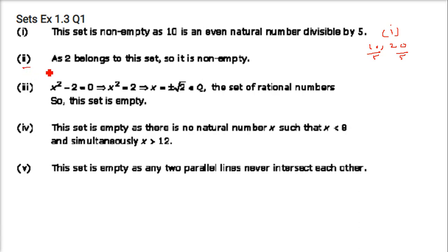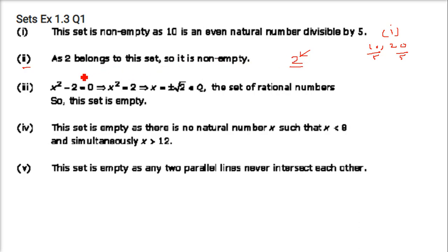The second part is the set of all even prime numbers. We have the number 2, which is the only even prime number that exists in mathematics. So this set is also not empty — it has 2 in it.